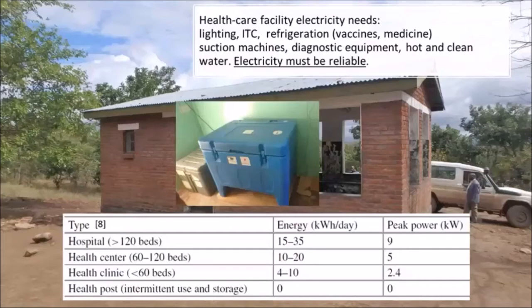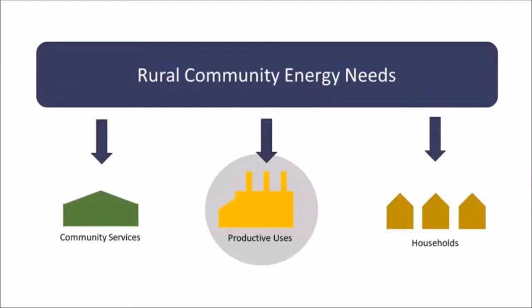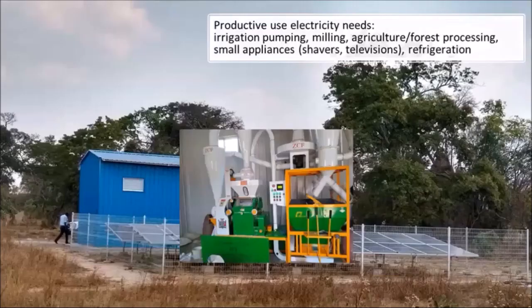Healthcare facilities have the same lighting and ITC needs, and their lighting needs are perhaps more pressing in case of emergencies in the middle of the night. But they also need electricity to run diagnostic equipment and various machines for healthcare. One important application is refrigeration for vaccines and medicines — there's a picture here of a solar-powered vaccine refrigerator. It's very important to keep vaccines and medicines within a very narrow band of temperatures. So if your organization is seeking to provide electricity to a health clinic, you have to make sure it is reliable. There's also a table of typical energy use and peak power needs of healthcare facilities, which are important inputs for any design.